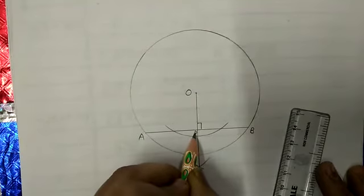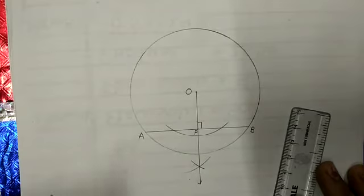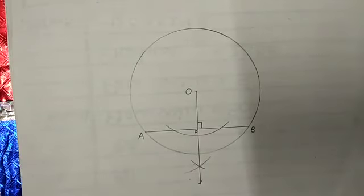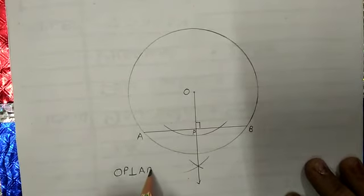Now we will join this intersecting point with center O. See, we can observe the line obtained is perpendicular to the given line. We can name it any point. Name this point as P or any other letter we can write here. Now we will write here, OP is perpendicular to AB.